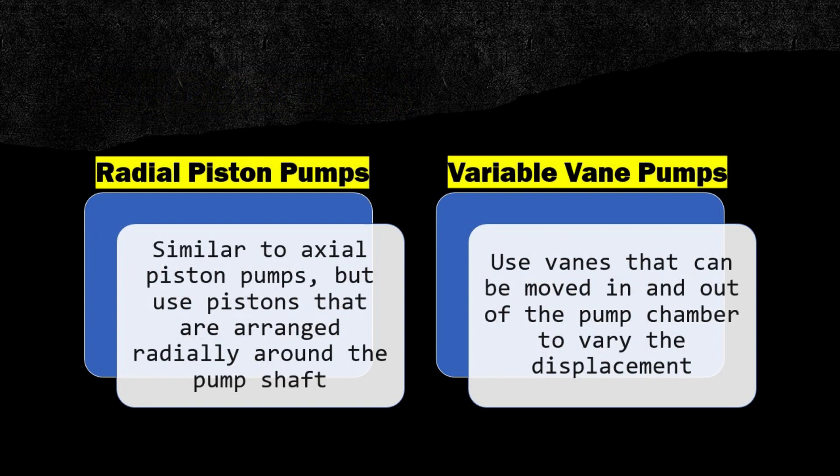Radial piston pumps are similar to axial piston pumps, but use pistons that are arranged radially around the pump shaft. Variable vane pumps use vanes that can be moved in and out of the pump chamber to vary the displacement.